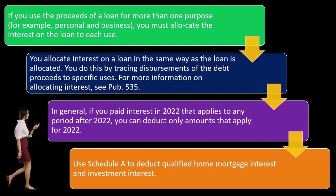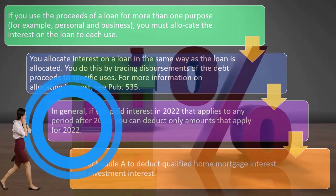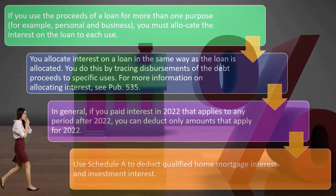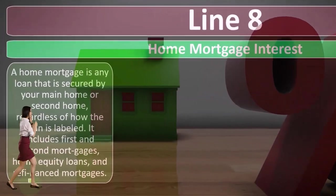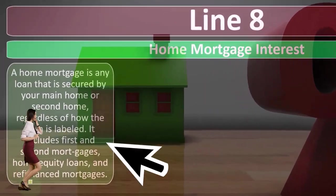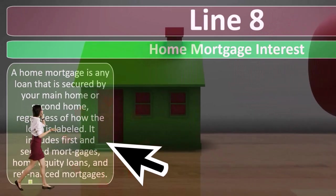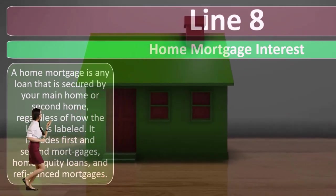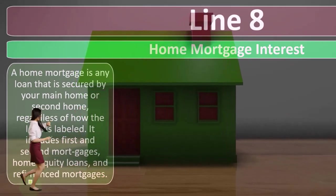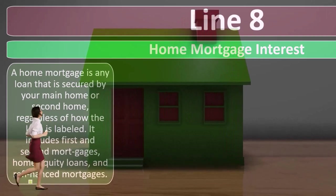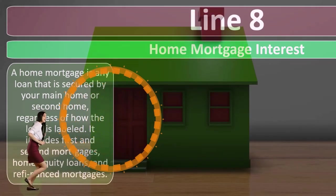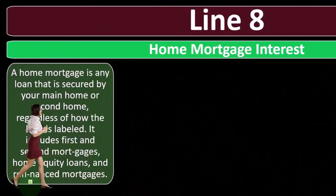Use Schedule A to deduct qualified home mortgage interest and investment interest. On Line 8, home mortgage interest: a home mortgage is any loan that is secured by your main home or second home, regardless of how the loan is labeled. That includes first and second mortgages, home equity loans, and refinance mortgages.